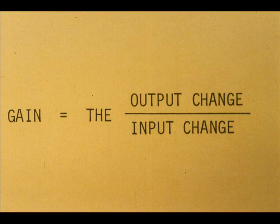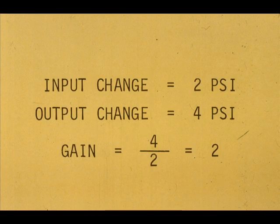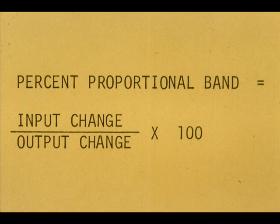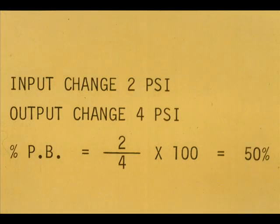Gain equals the output change divided by the input change. If a two-pound input change to a controller gives a four-pound output change, the gain is two. The units could just as well be milliamps. Percent proportional band equals the input change divided by the output change times 100. If a two-pound input change to a controller gives a four-pound output change, the proportional band is set at 50%.